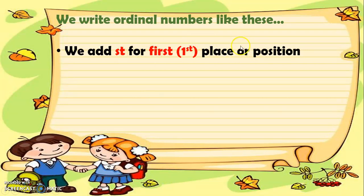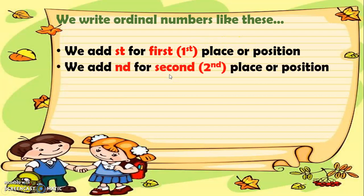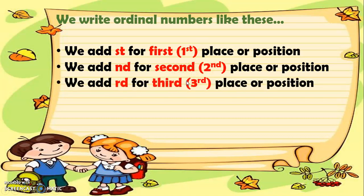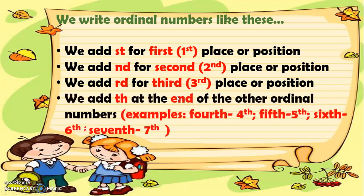We write ordinal numbers like this: we add 'st' for first place or position, so we have 1st. We add 'nd' for second place or position, so we have 2nd. We add 'rd' for third place or position, so we have 3rd. And for the rest of the numbers we add 'th' at the end of the other ordinal numbers.